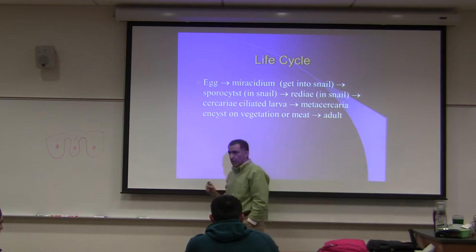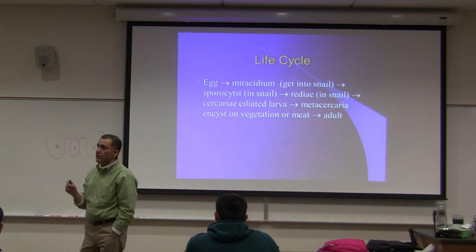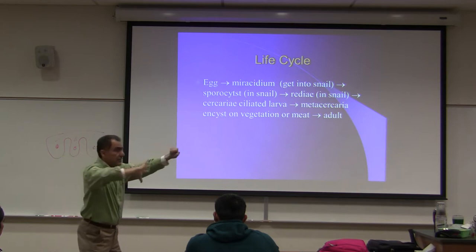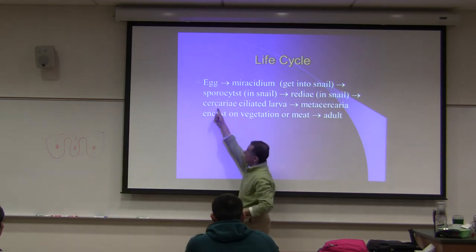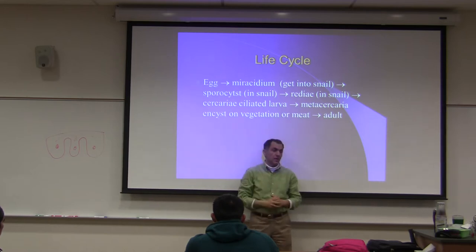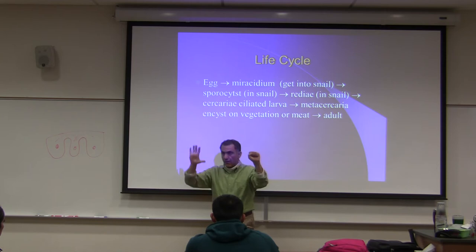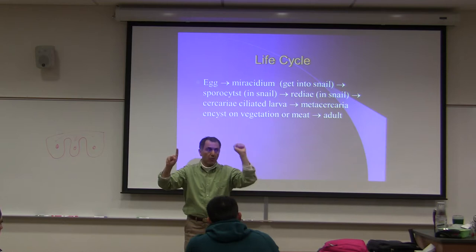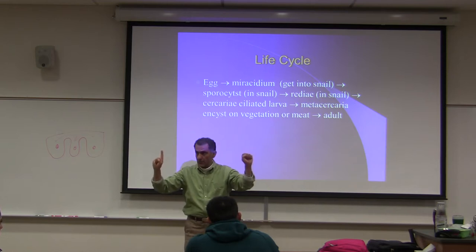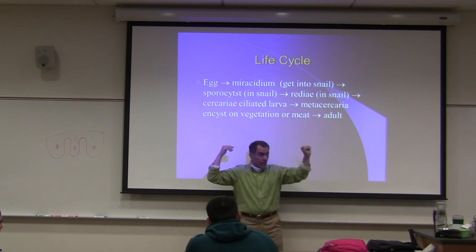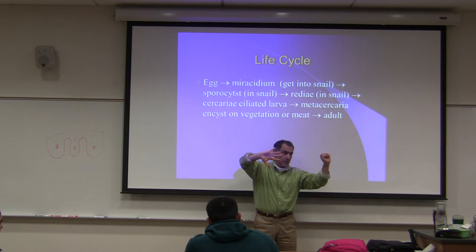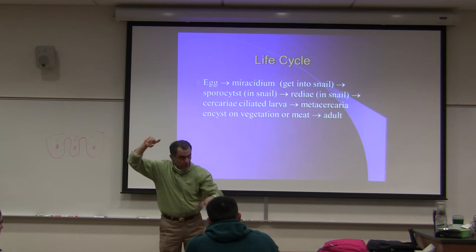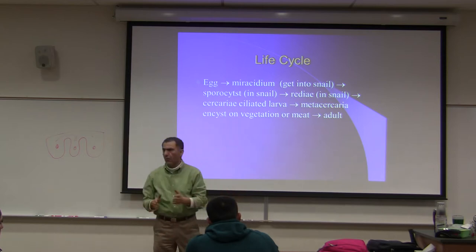In animal kingdom, you do not have any other species where one egg becomes many larvae. All of the animals we studied so far - one egg eventually becomes one adult. These guys are different: one egg becomes many cercaria, many larvae. Each larva has to find the right host, and when they find the right host, the life cycle is complete.